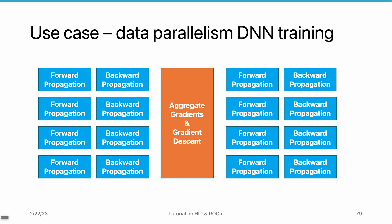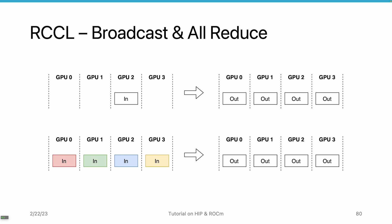Then we need to broadcast this new parameter set to all the GPUs so they can use it in the next iteration. So basically we need two features: one is a reduce feature that calculates the average, and the other is broadcast. RCCL supports these communication primitives — broadcast can send data from one GPU to all GPUs, and all-reduce calculates the average of buffers stored on every GPU and broadcasts the result to all GPUs.